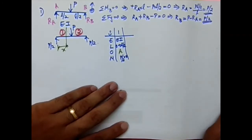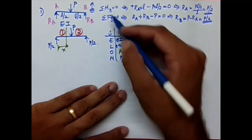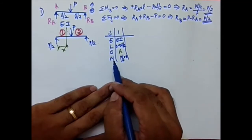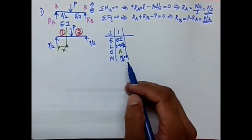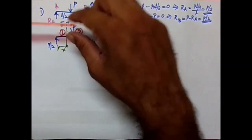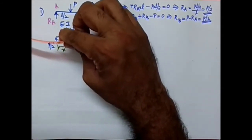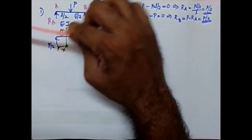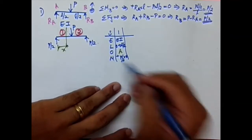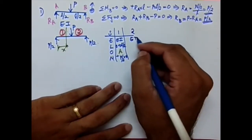Now for the sign: this is a moment at a cross-section, so we use the sagging and hogging sign convention. Holding the section and applying the load at the free end, the beam bends in a sagging form — so this is a positive moment. The moment for Segment 1 is +PX/2.